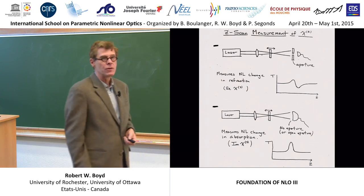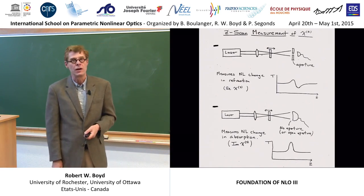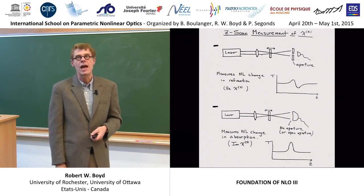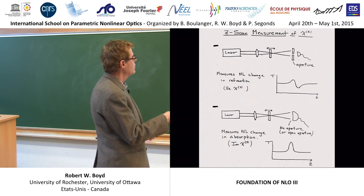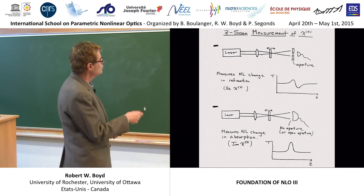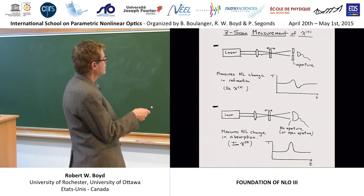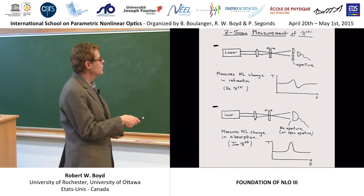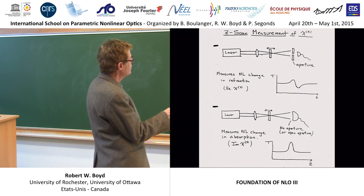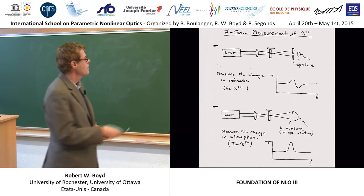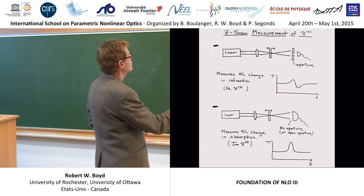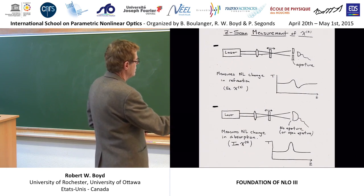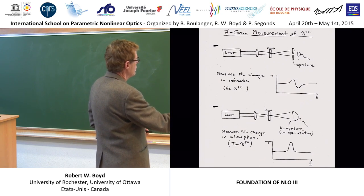Now that we're talking about self-focusing, let me also point out that self-focusing is a very accurate way of measuring Chi3, or equivalently measuring N2. This is called the Z-scan method. You take a laser beam, bring it to a focus, take the sample that you want to measure, and slowly translate the sample through the focal region of the laser beam. You then place a pinhole and a detector behind the pinhole. If you measure the transmitted power as a function of distance Z, you will get a curve that looks something like this.